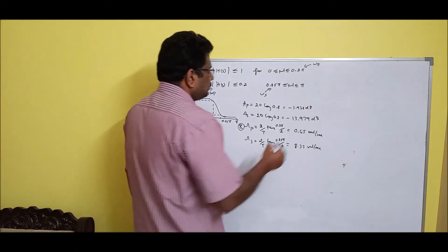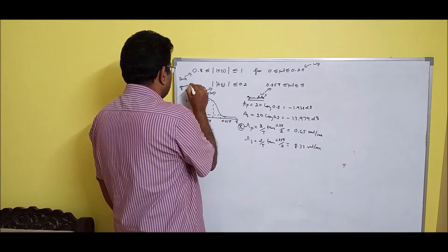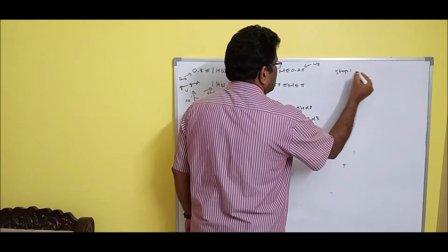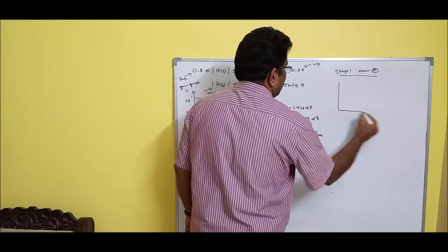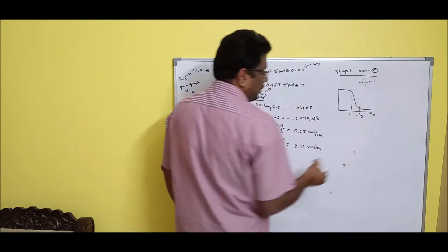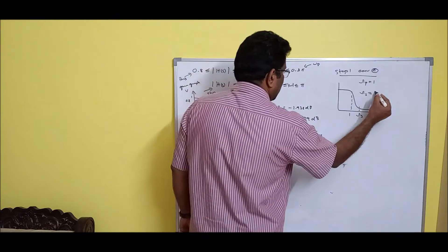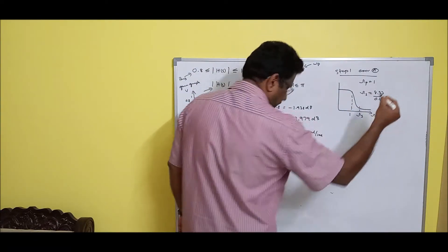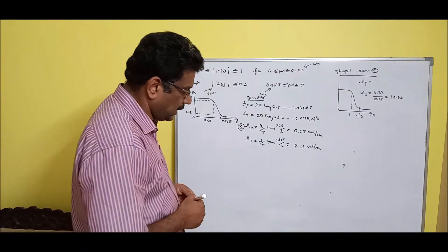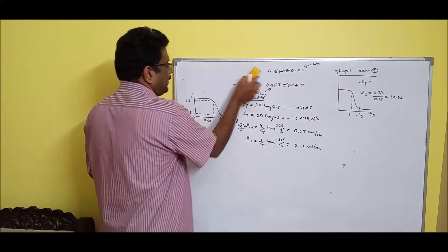All given data is now ready. Step 1 is conversion A — normalizing to a prototype low-pass filter. Always set Ωp = 1, and compute Ωs' = Ωs / Ωp = 8.33 / 0.65 = 12.82 (dimensionless, since rad/s cancels). With this data we enter Step 2 — the actual filter design.